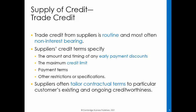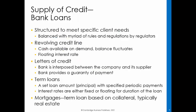There are numerous parties that supply both operating and non-operating credit to meet companies' demands. Trade credit from suppliers is routine and non-interest bearing. Companies apply for credit and provide the supplier with relevant financial information, which is especially important for private companies that want trade credit. Whereas suppliers can use publicly available data to evaluate the credit risk of public companies, such information is not available for private companies. Suppliers' credit terms specify the amount and timing of any early repayment discounts, the maximum credit limit, payment terms, and other restrictions or specifications.